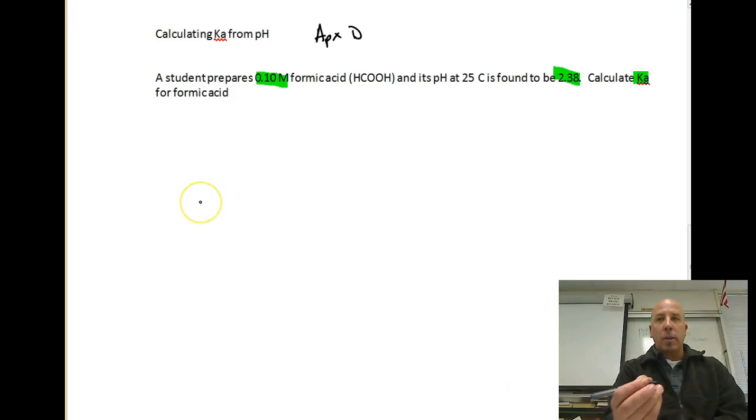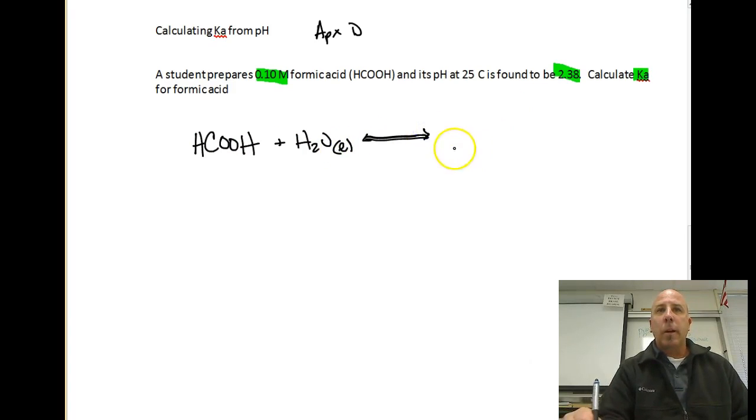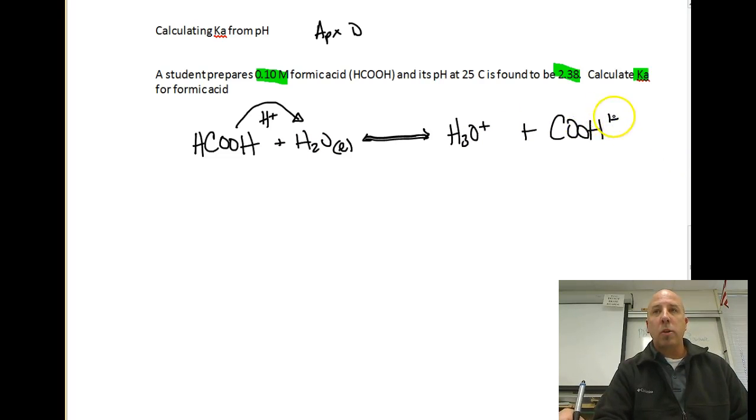So, what we're going to do first off is we're going to write a dissociation equation for formic acid. So, HCOOH, we're going to react it with liquid water, and it's going to, because it is an acid, it's going to donate its hydrogen ion to water. So, we're going to get H3O+, and then we're going to get the formate ion HCOO-. Remember that charge of the one minus there. Now, I can also write H3O+ as hydrogen ion, so I'm going to go ahead and do that.